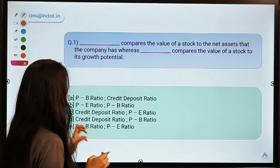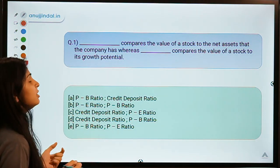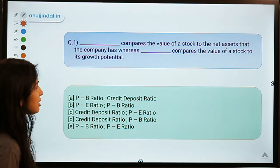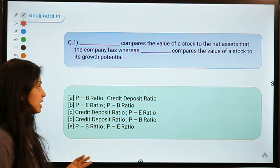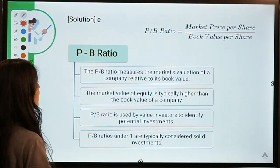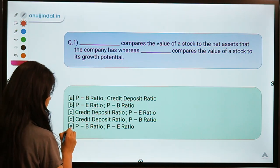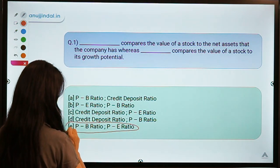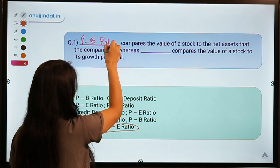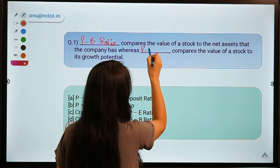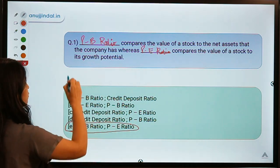Question number one: 'Dash compares the value of a stock to the net assets that the company has, whereas dash compares the value of a stock to its growth potential.' The correct answer is option E — PB ratio and PE ratio. In the first blank it should be PB ratio, and in the second blank it is PE ratio.